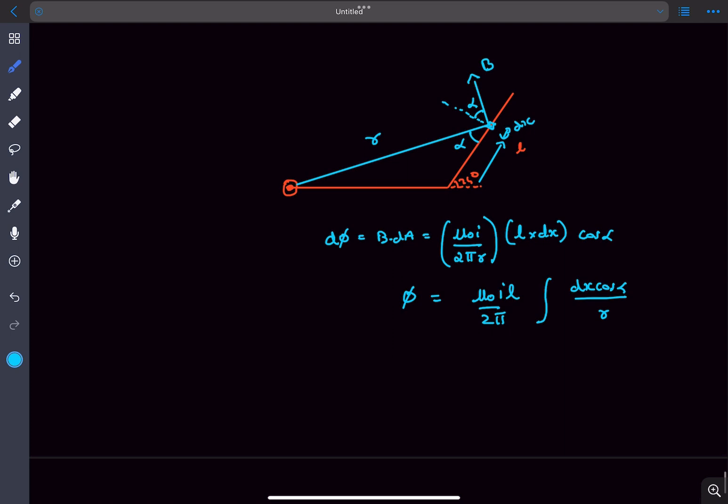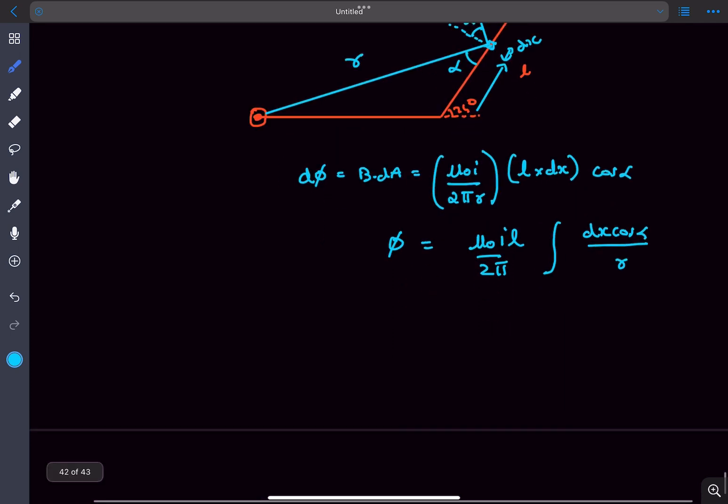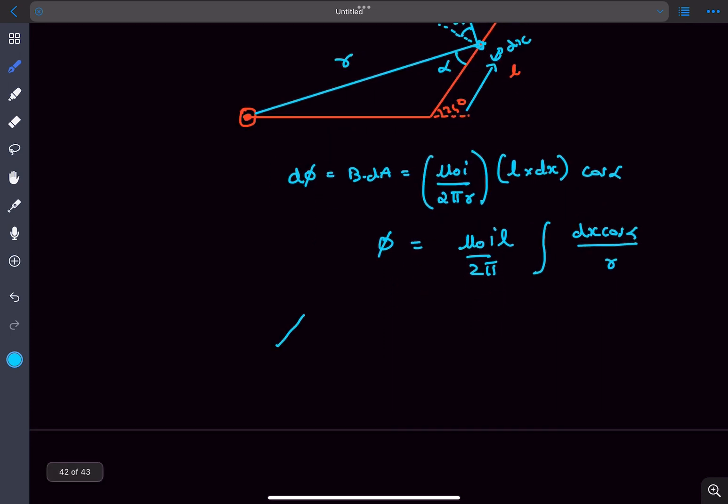Now the interesting part of this integral is that if we zoom in on the dx element, this is our dx element, this is our r vector. The magnetic field will be in this direction and the normal to the square loop is along this direction, and the angle between these two is alpha. If I extend this line r in this direction, even this angle right here is alpha.